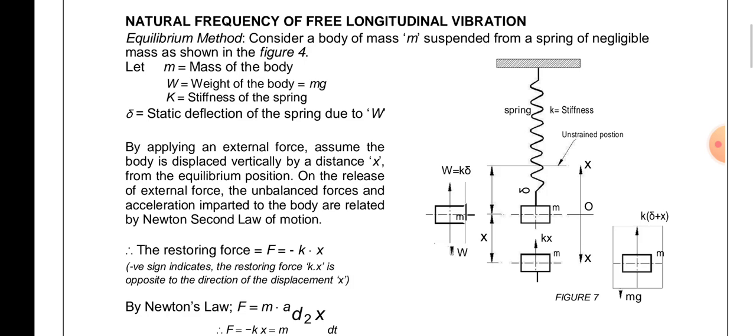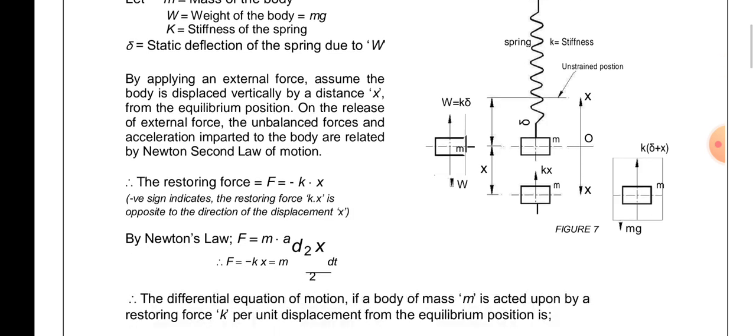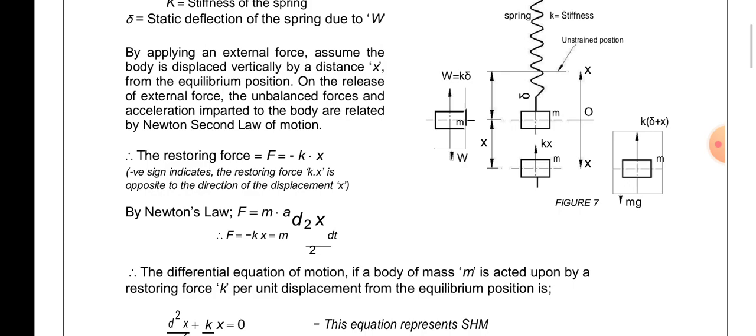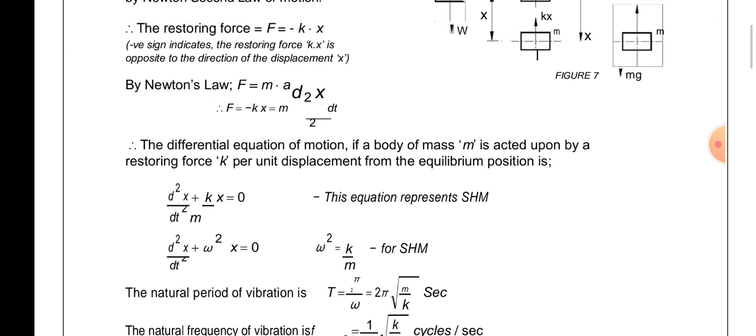The restoring force is F = -kx. By Newton's law of motion, F = ma, so F = -kx. Also, F = m·(d²x/dt²). Therefore, the differential equation of motion of the body of mass m acted upon by the restoring force for any displacement from the equilibrium position is: d²x/dt² + (k/m)x = 0.